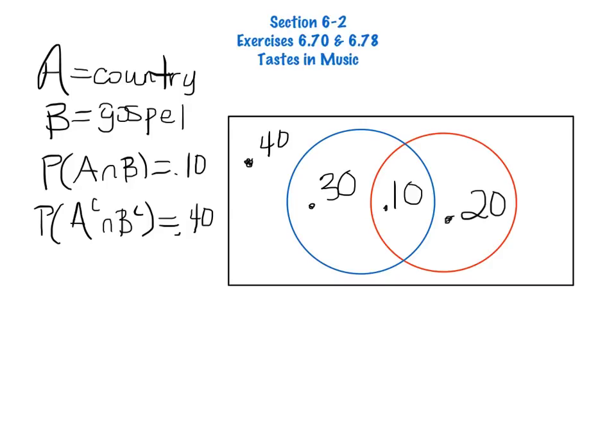The probability that a college student likes neither country nor gospel, this is this outside space that I see here, is .40. So then what does the .3 represent, and what does the .2 represent? The .3 represents those college students who like only country, meaning they like country and they don't like gospel. And in the red circle, this is the probability that a student likes gospel, but not country. So that's .2.